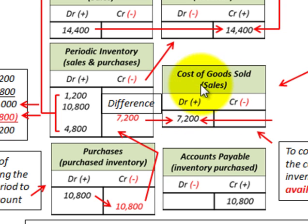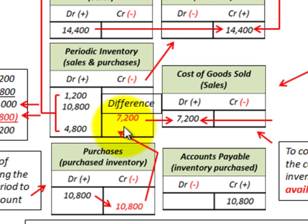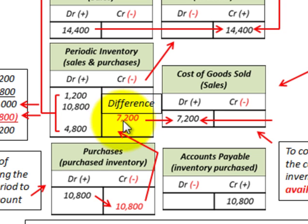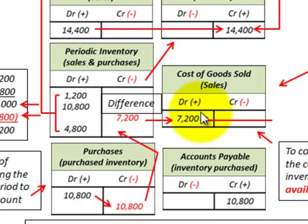There's one more thing to note about cost of goods sold in inventory accounting: you may have overages or shortages. With the perpetual inventory system, a physical count is done and inventory records are adjusted. But with the periodic inventory method, there are no records to adjust against, so we can't adjust the inventory account for shortages or overages — we have to bury those costs in cost of goods sold.